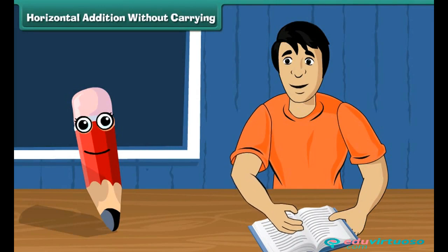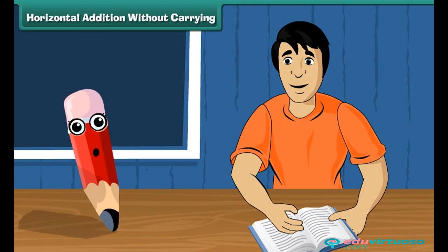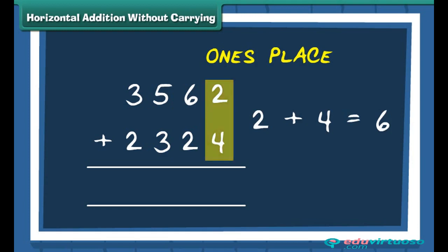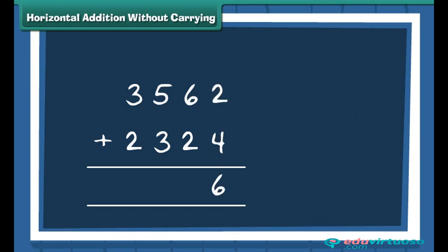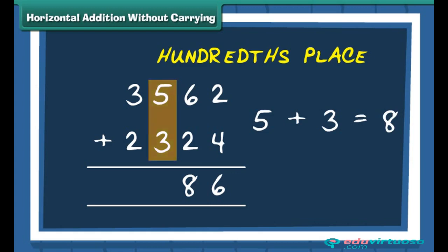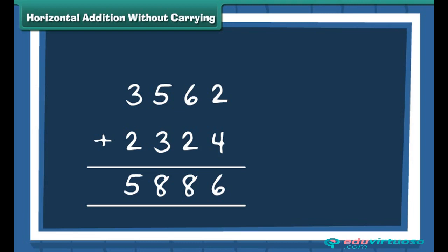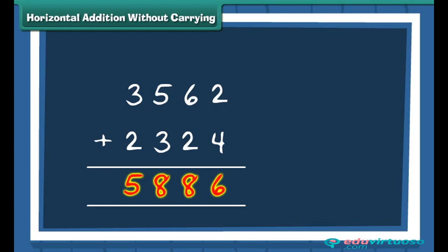That was simple, but tomorrow my assessment will be on four-digit numbers. Could we practice those now? Let me show you how to add two numbers horizontally. We have 3562 and 2324. We first add the digits at the ones place, then move to the tens place, then the hundreds place, and finally the thousands place. The sum of 3562 and 2324 is 5886.